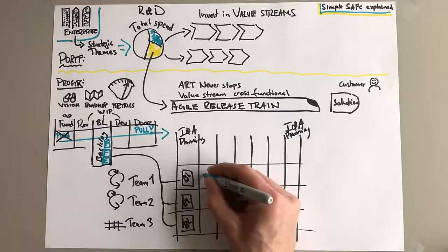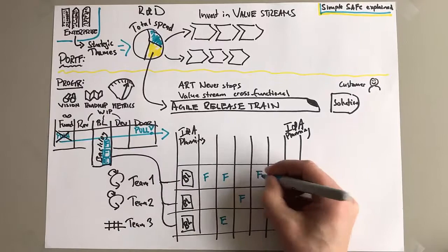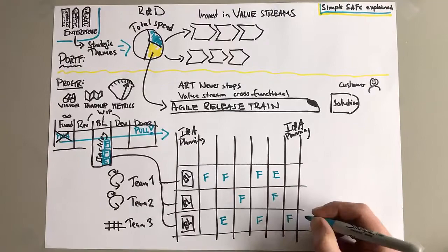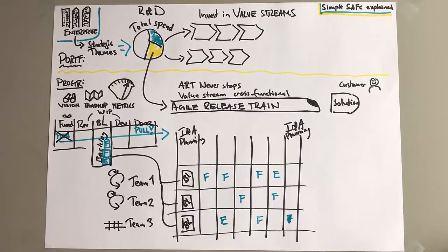So now during the planning, these three teams that we have in our example, they are planning out when they're going to deliver features. You could also look at user stories here, depending how big your features are. How big are your features? Well, if they're too big - hey, someone planned a feature in the last sprint? You don't do that.